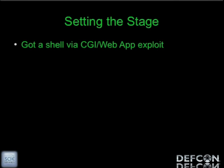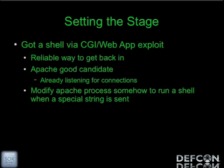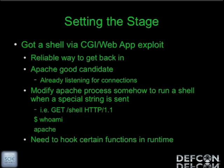To set the stage: I've got a shell via a CGI web application exploit and I need a reliable way to get back in. Apache is a really good candidate to target because it's already listening for connections — it's got its front door open. My end goal is to modify the Apache process to run a shell when a special string is sent. So when I send it 'GET /shell HTTP/1.1', it's going to drop me into a shell and if I run whoami it'll say Apache. In order to do that, I need to hook certain functions at runtime.